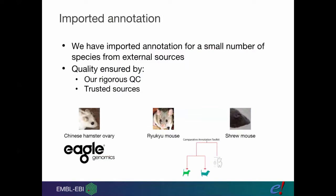For a small number of species, we also have imported annotations. Chinese hamster ovary, which is a very important cell type, plus two breeds of mouse, and C57BL/6J mouse, we imported from other sources. These are trusted sources who we know are going to annotate to high quality, but we also carry out rigorous quality control on these so that we know they're to the same standard as the other genomes that we have.